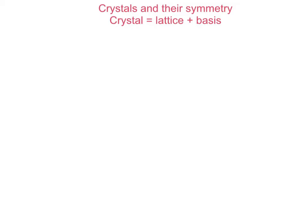The lattice is essentially a mathematical construct — a collection of regularly or periodically spaced points in real space. And the basis is nothing but a collection of one or more atoms, of one or many different types, associated with each lattice point.